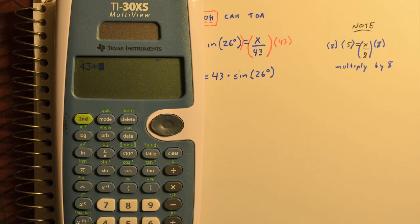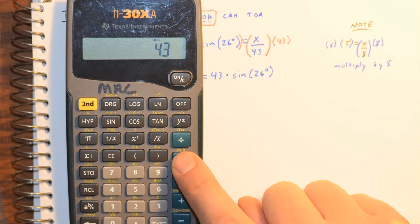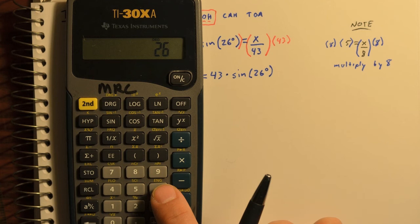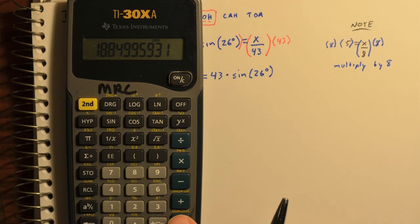And then it's time to pull out a calculator. 43 times the sine of 26 should give us 18 point, let's say 18.85. If instead you have a calculator that is like this one, you'll have to type in 43 and then hit the multiply button times and then type in 26 first. Then tap sine. Then tap equals. 18.85.